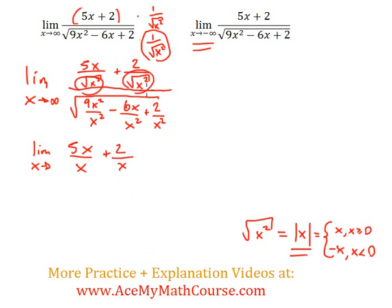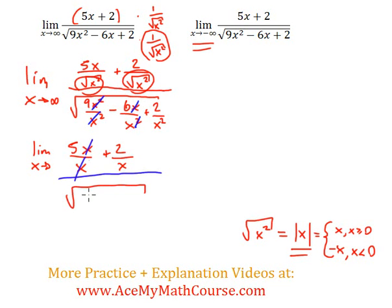So for both terms in the numerator, we have just x, and those cancel out. In the denominator, x squared and x squared cancel, and x with x squared simplifies — so we end up with 9 minus 6 over x plus 2 over x squared.